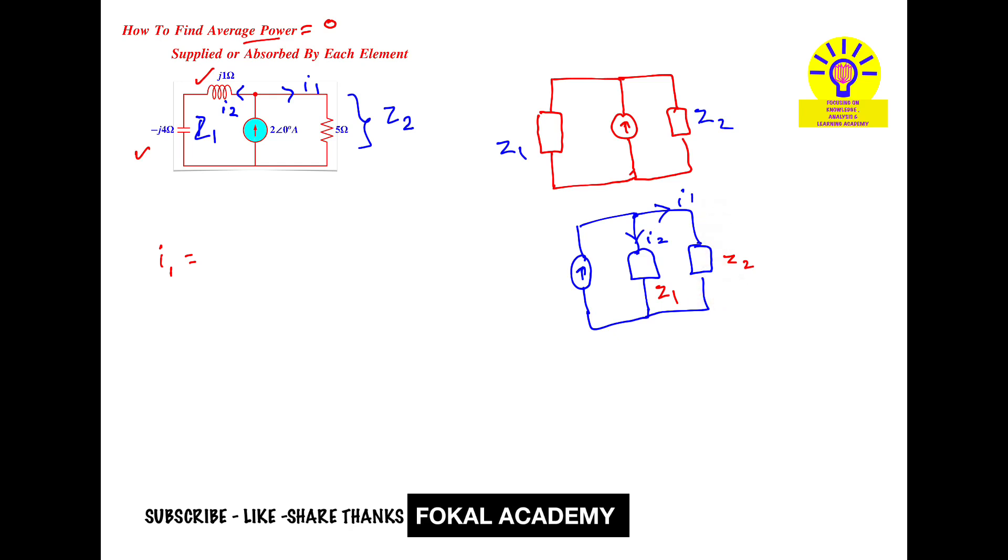In this branch there is current I2. So I1 is the current we need in branch 2. According to current division rule, we take the opposite branch impedance divided by overall impedance. For the Z1 branch, the impedance is Z2.